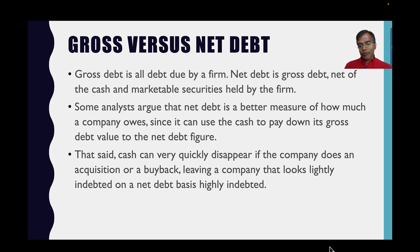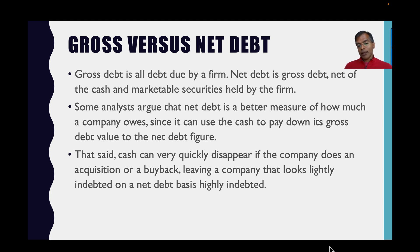Some analysts argue net debt is a better measure of how much a company owes because cash can be used to pay down debt. However, cash can quickly leave the firm through an acquisition or buyback, causing a company to go overnight from looking lightly indebted on a net debt basis to highly indebted. I report both gross and net debt ratios, but I focus on gross debt ratios because they are better indicators of long-term leverage. I hope you find this dataset useful — thank you for listening.